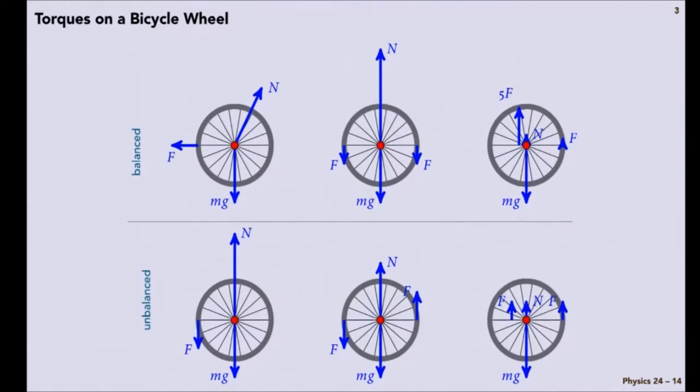I have three different examples here of forces that are balanced. Notice I'm not going to get rid of gravity. There's going to be some kind of normal force being applied at the hub, at the axle.